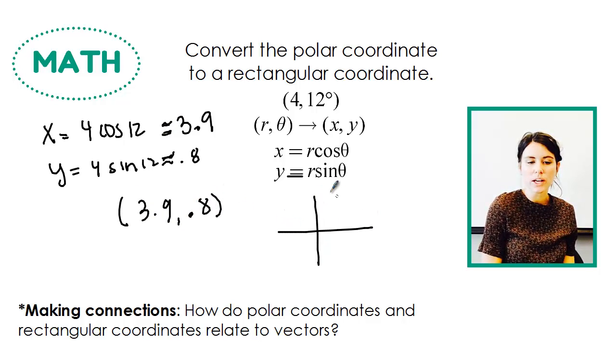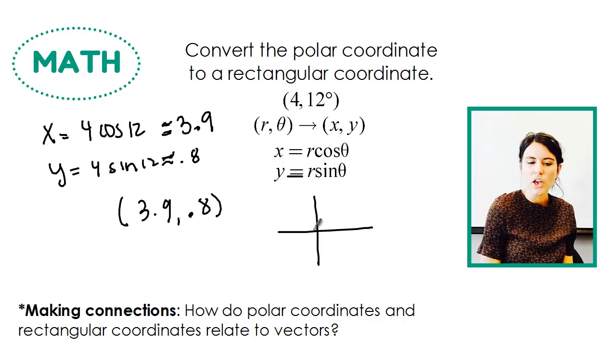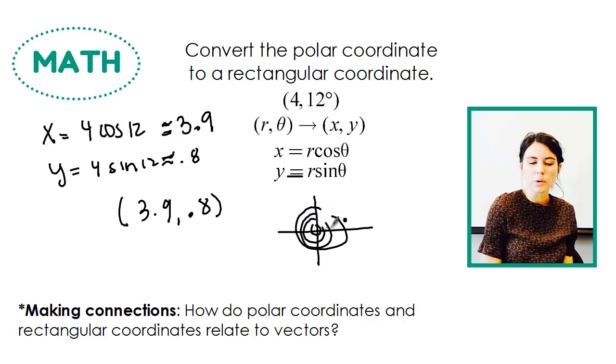If you wanted to check that real quick, we could plot both of these on kind of the same plane just to make sure they're in the same direction. So (3.9, 0.8) is about right here. And then if I had my little rings and I was plotting my polar coordinates.